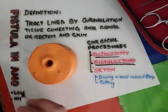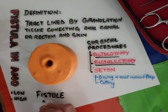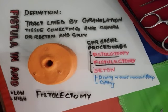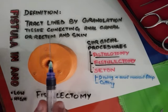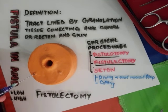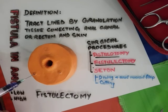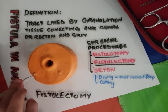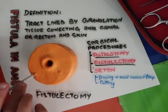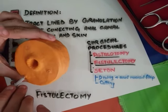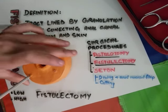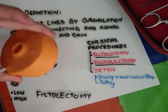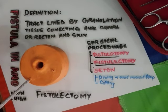Now for fistulectomy — in fistulectomy we basically remove the whole tract by cutting around it. In order to do that we have to identify the tract. We can do it by either injecting methylene blue dye through the external opening, or we can pass a probe through it slowly and smoothly to identify it, and then we cut all around it. The probe has been passed; you can see it is coming out from the other end, and the dye has also spilled through the opening. Now we are going to cut around it to remove the tract.